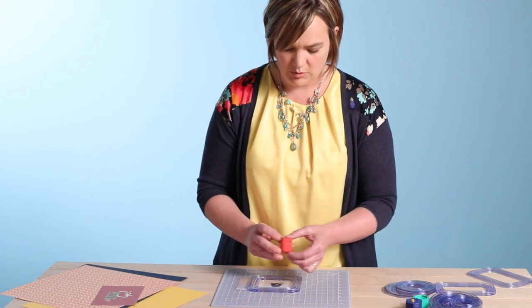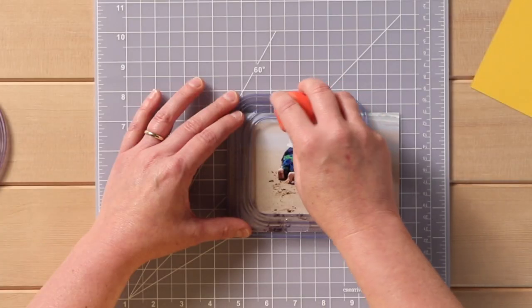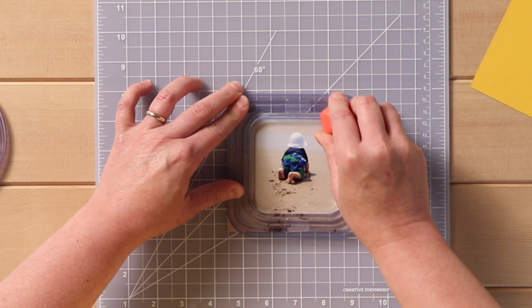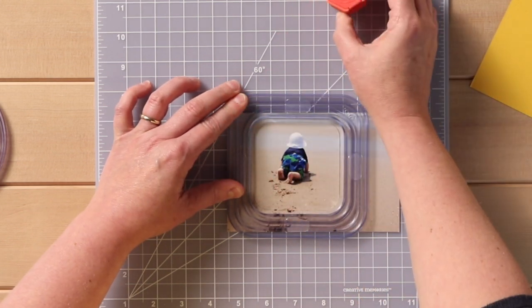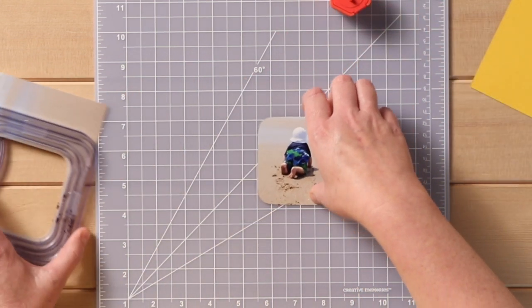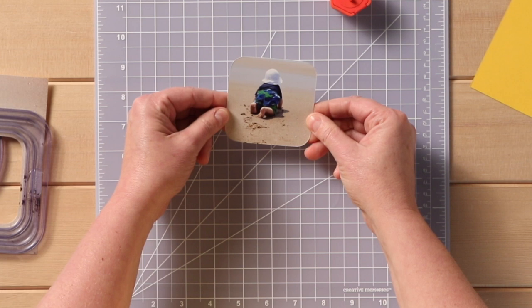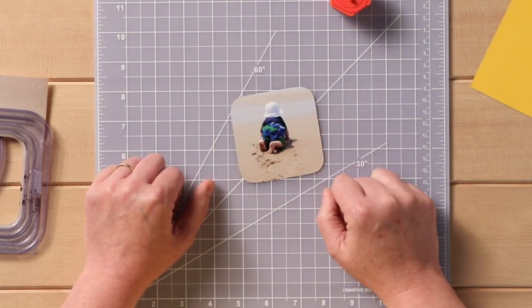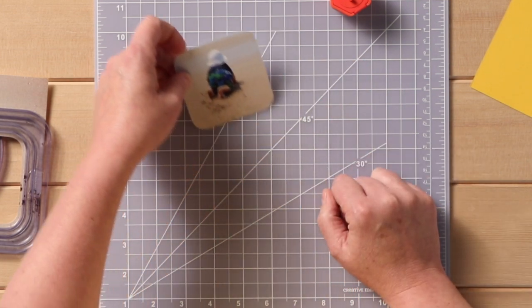And so we'll put the pegs in, and we'll just cut around. And again you see I can just kind of smoothly go, and there you go, voila! We've cut down the little picture, and so we just focus in on the little toddler crawling on the sand.